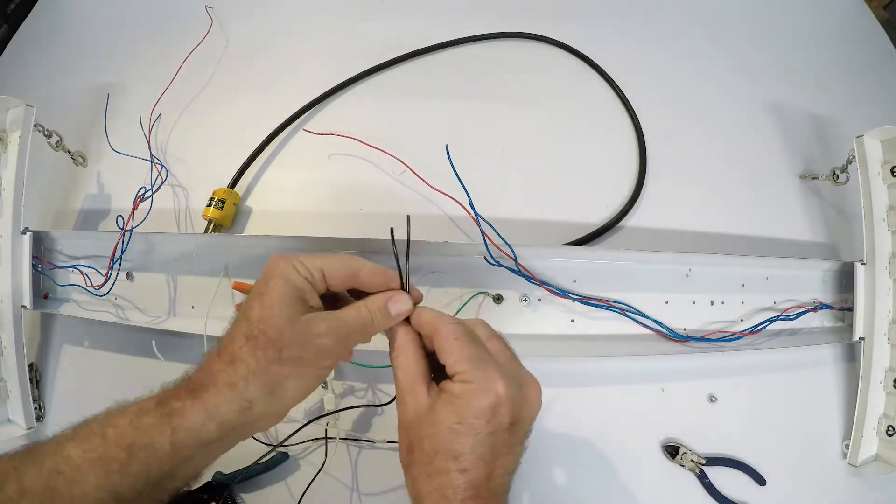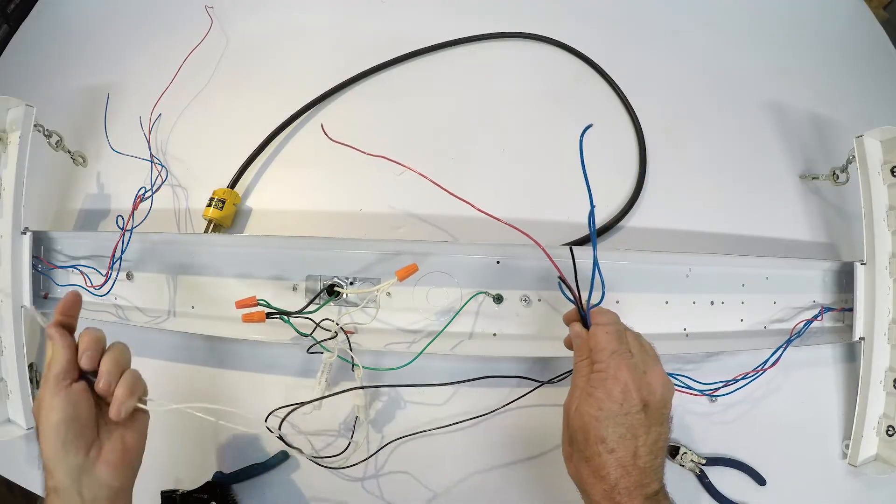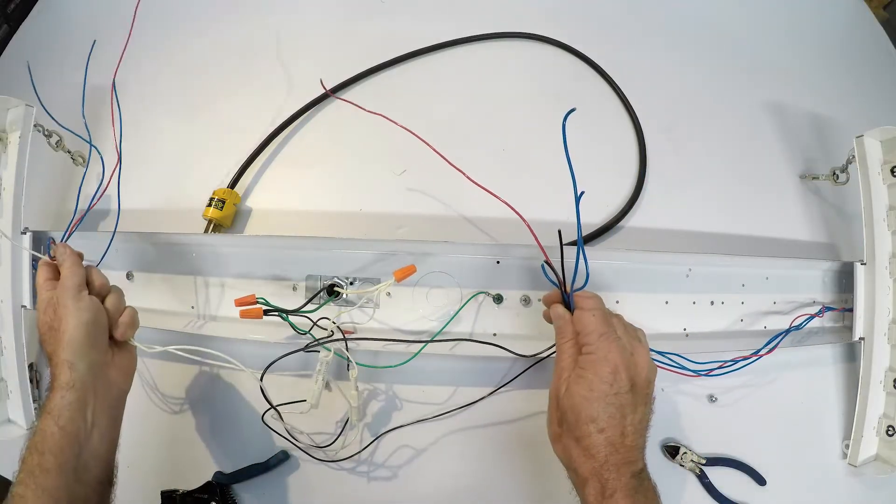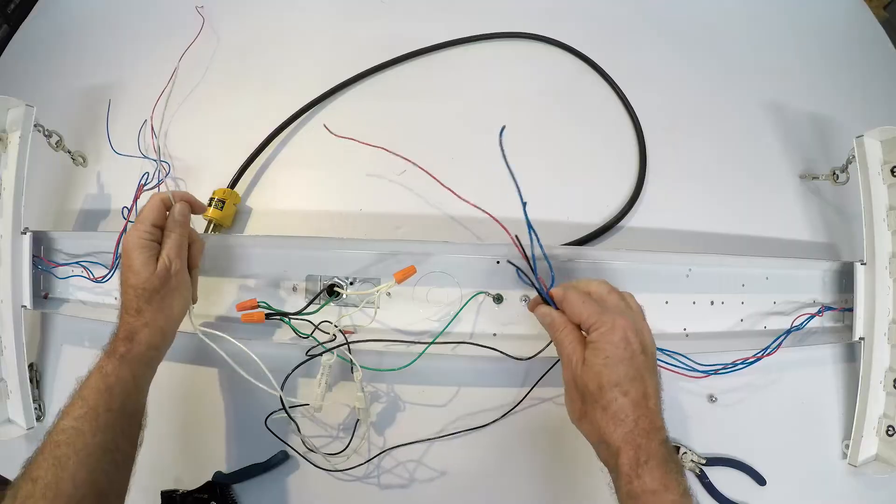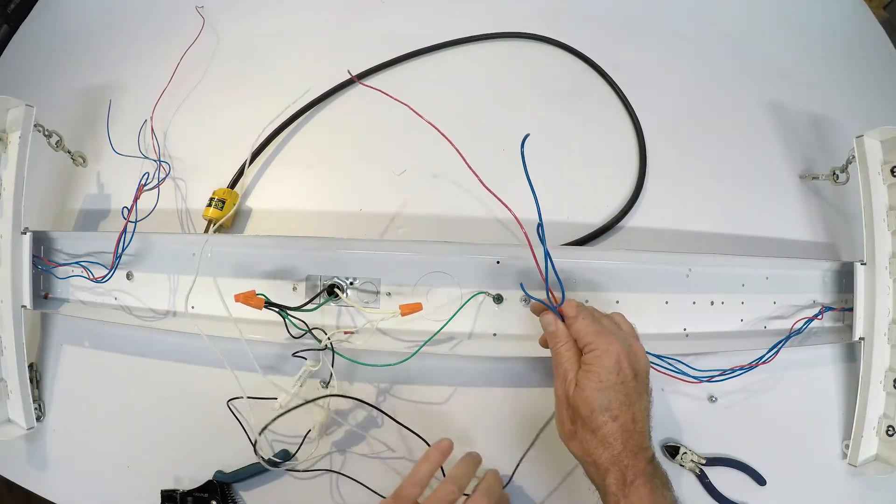We're going to connect all the blacks together going to this side of the light fixture. And we're going to connect all the whites together going to the other side of the light fixture. So I'm going to trim these up, make them look kind of pretty, and then I'm going to come back here and show you what that looks like.